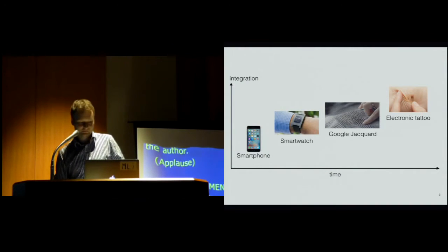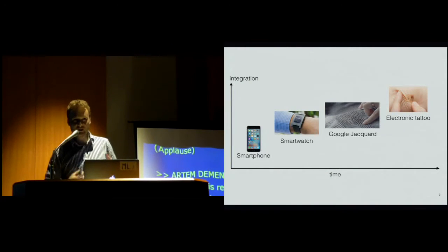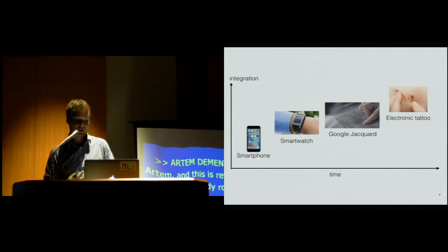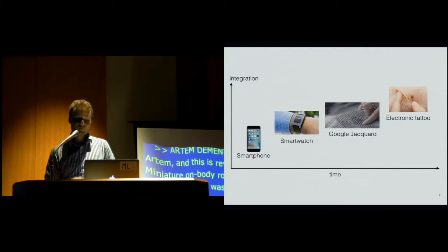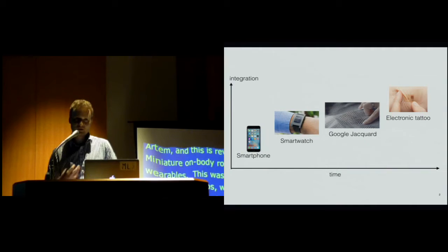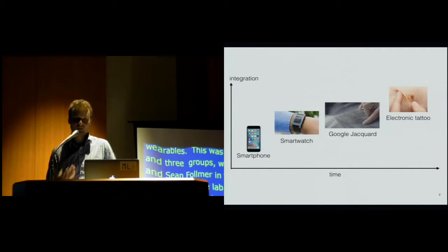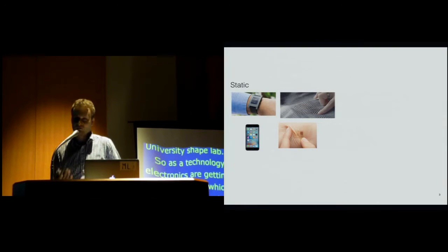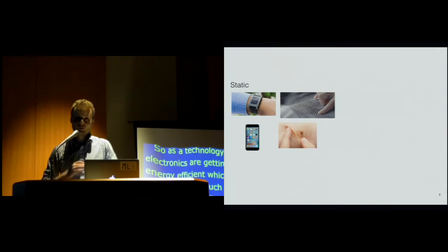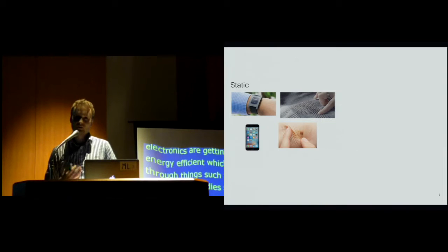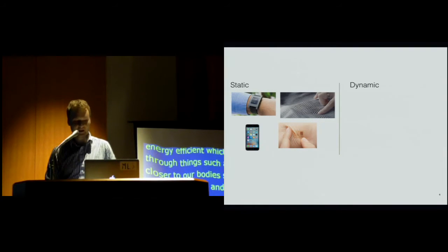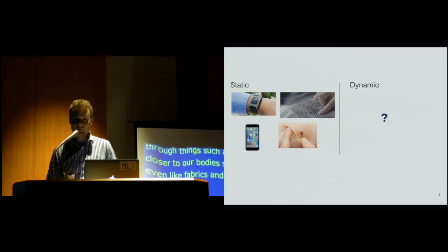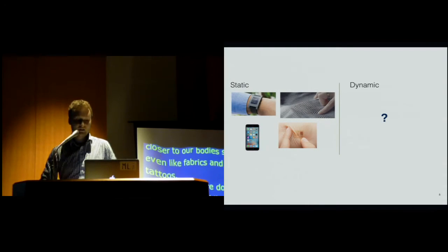So as the technology improves, the electronics are getting smaller and more energy efficient, which allows us to move from things such as smartphones closer to our bodies, into fabrics, and now even electronic tattoos. But this future doesn't have any possibility of mobile wearables. All the wearable technologies, you put them on the skin anywhere, and they just stay there.